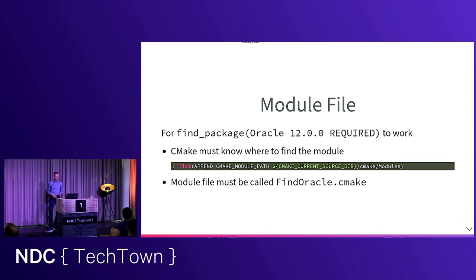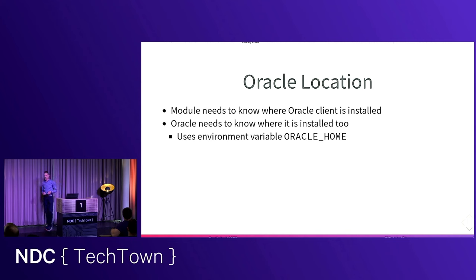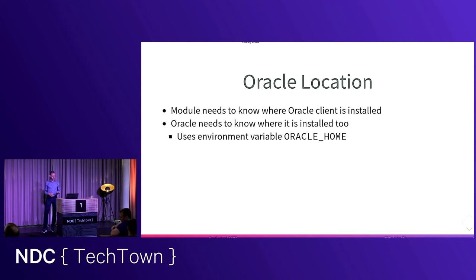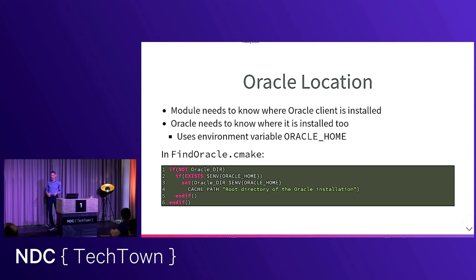First, we need to know where Oracle is installed, because otherwise we can't find anything. Luckily, Oracle itself needs to know where it's installed and uses the environment variable ORACLE_HOME for that. We'll use that too. We create a cache variable ORACLE_DIR containing the location, populated from the environment variable ORACLE_HOME. You can override it on the command line, though I'm not sure that's always a good idea. If ORACLE_HOME is not set, ORACLE_DIR will be empty and finding anything will fail.